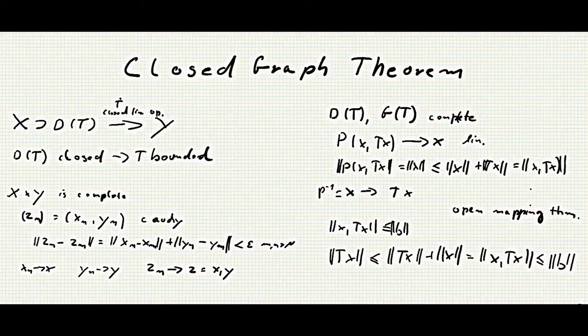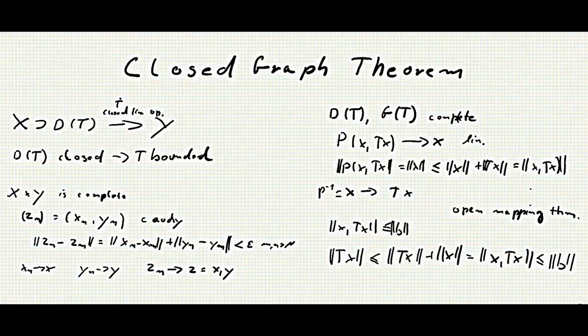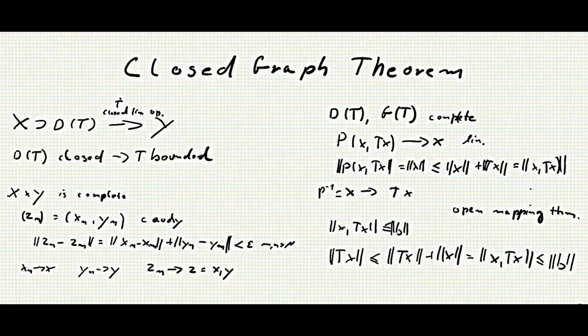So now let's look at the proof. What we'll do first is show that X cross Y is complete. So let's consider a Cauchy sequence, let's call it z_n. This is really a sequence (x_n, y_n). And we have to show that this Cauchy sequence converges to a point in our space X cross Y to show that the space is complete, as usual.